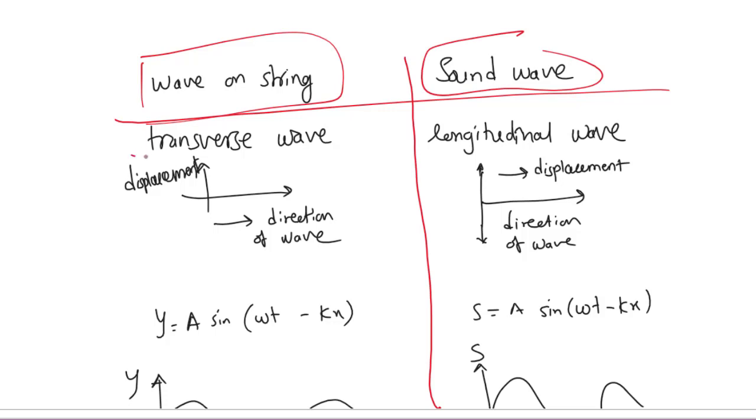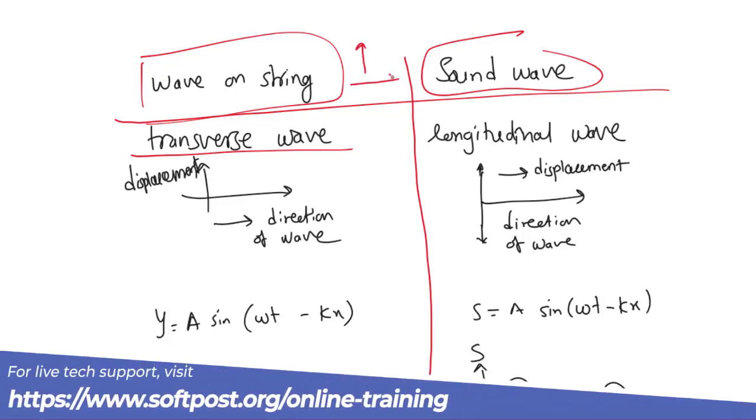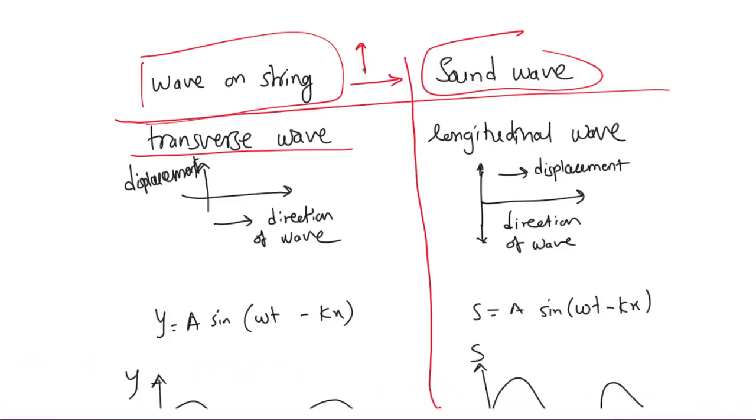String wave is a transverse wave. Displacement of the particles and the direction of the wave is perpendicular to each other.